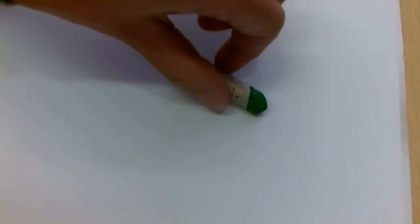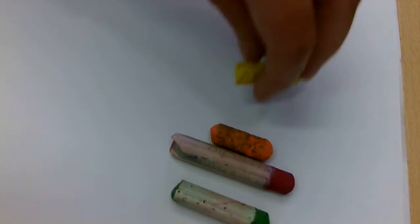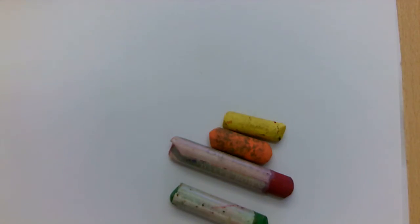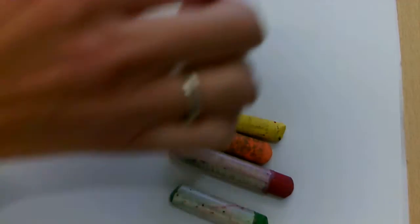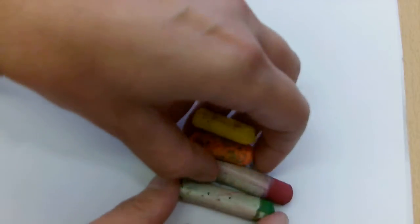Today I'm going to show you how to do Scraffito, which is a technique where we use oil pastels and we color in a square with lots of bright colors and we put a darker color over the top like a black and then we scratch through. So Scraffito actually is a word which means to scratch through and you're going to be doing this for your natural forms.